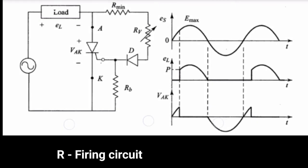Of course, if RV is made large enough, the SCR gate current will never reach IG minimum and the SCR will remain off. The minimum trigger angle is obtained with RV equal to 0.